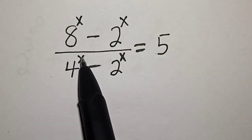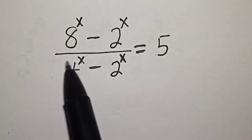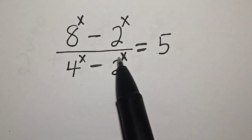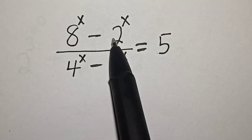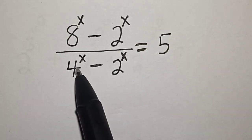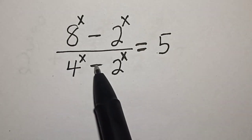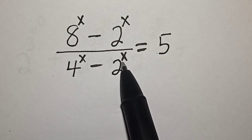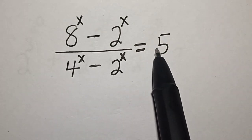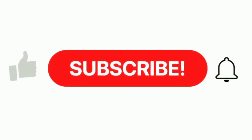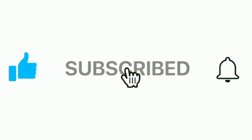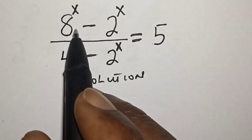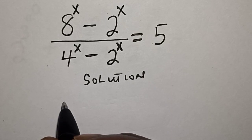Hello, welcome to Magist. In this class we want to find the value of x from this equation: 8 raised to power x minus 2 raised to power x, divided by 4 raised to power x minus 2 raised to power x, is equal to 5. Like, share, comment and subscribe.